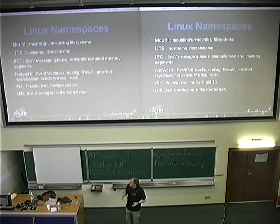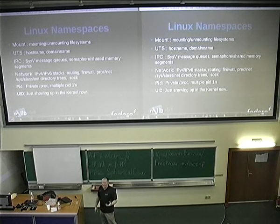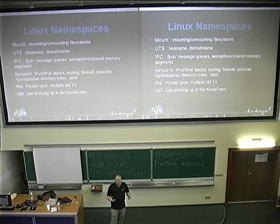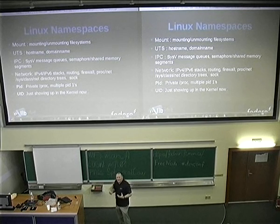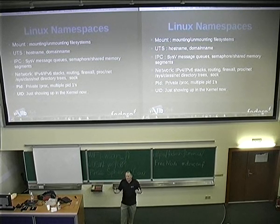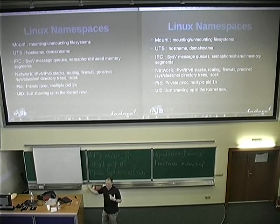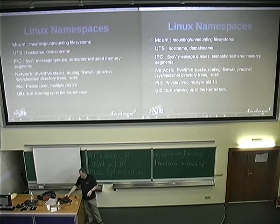The last namespace that just came about is the UID namespace. UID namespace scares me because I don't fully understand how it's going to work, and there are lots of problems around it — especially with shared storage. How does a UID namespace work when you're talking to an NFS share? But UID namespace has been merged into the kernel. That's the only things that are namespaced right now.